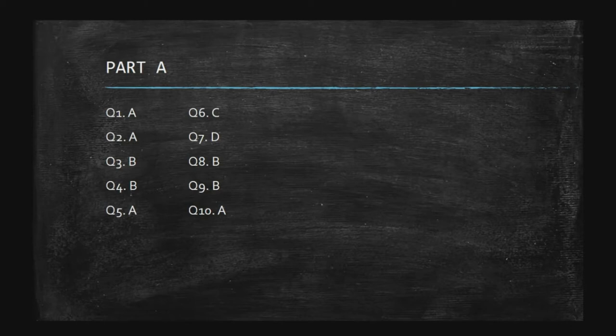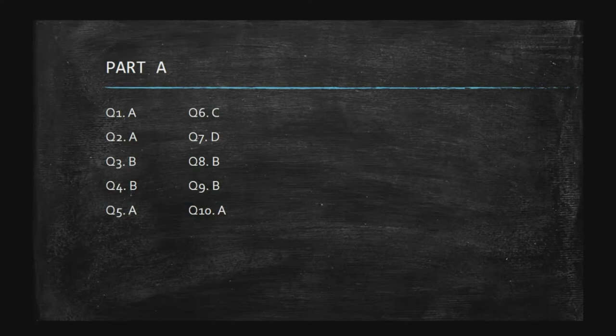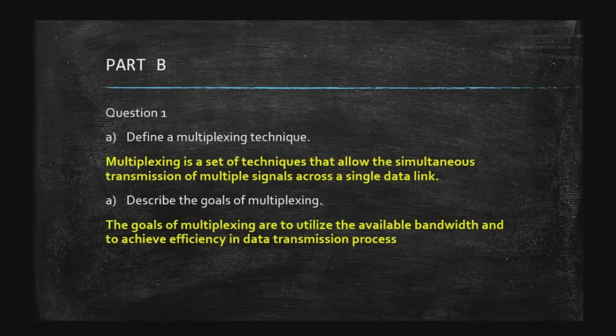You can check your answers: number one is A, number two A, number three B, number four B, number five A, number six C, number seven D, number eight B, nine B, and ten A. Most of the questions are theoretical questions, so you should refer to the reference book and the lecture notes to answer them. Next we go for Part B.